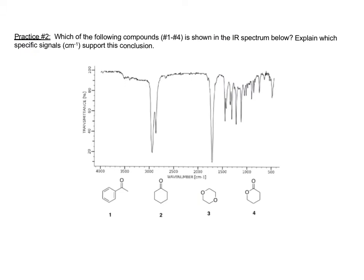Now let's jump to another problem. This is the second practice problem on that same page of the IR spectroscopy handout. In this problem, what we are asked to do is determine which of the four compounds shown down here at the bottom is shown in the IR spectrum and explain what specific signals support that particular conclusion.